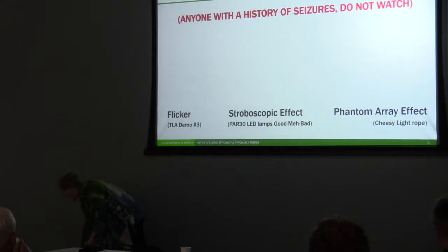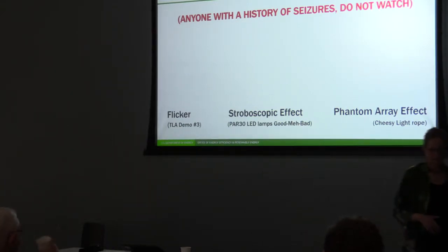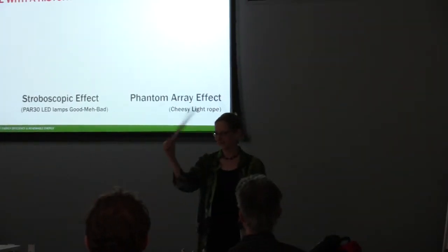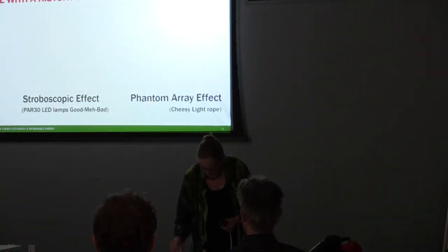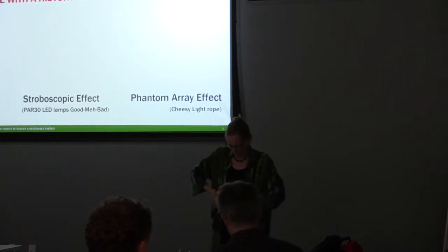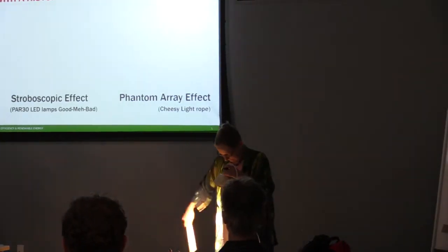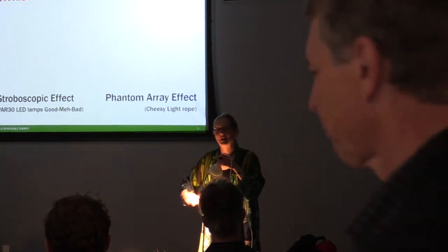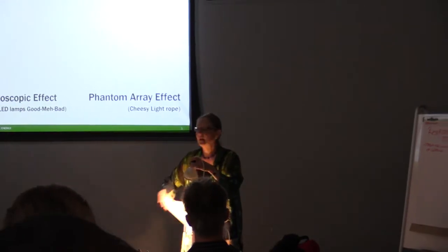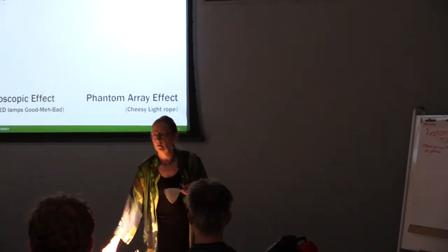Now you have that. Let's disconnect that. We're now going to go into the stroboscopic effect, and I'm going to use my handy-dandy flicker checker here. I'm first going to show you something that doesn't flicker. These are just different PAR-30 lamps, and I'll show it here against my black background. You're probably seeing a smooth fan of light as I wave the scale.